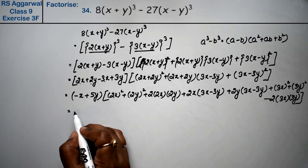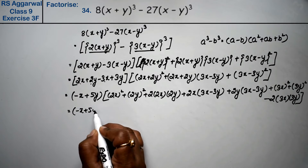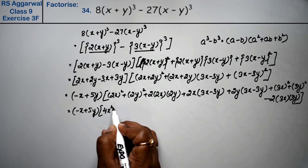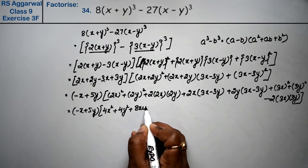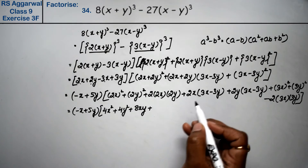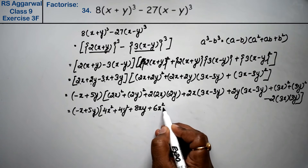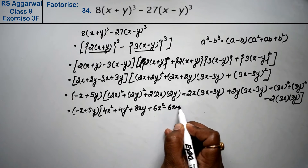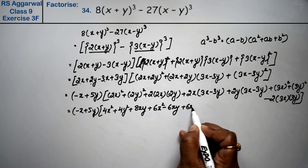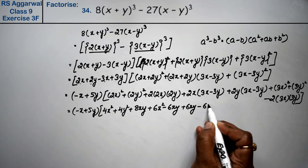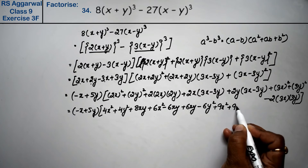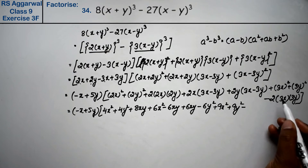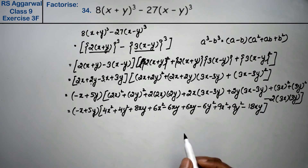Minus (x+5y) as it is. Inside the bracket: 4x², plus 4y², plus 6xy, plus 6xy, minus 6y², plus 9x², plus 9y², minus 18xy. Now minus 6xy plus 6xy cancel out.